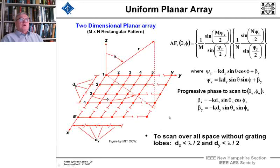Now we're generalizing in the next section to two-dimensional arrays, and the problem is completely separable. We have, instead of a psi, we have psi x and y, and the angles beta, we have beta x and y, and the progressive phase to scan to theta 0 and phi 0 is beta x and y equal to these values.